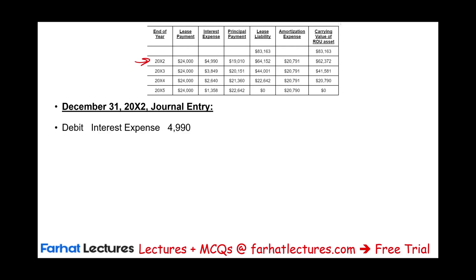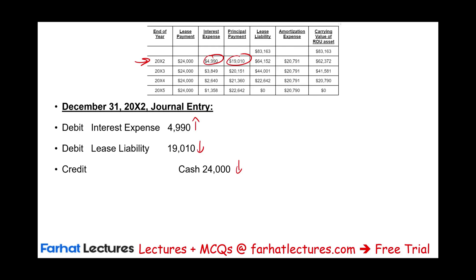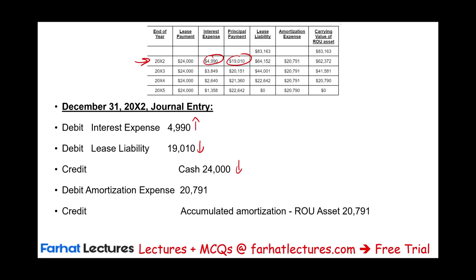For year X2, the journal entry is: debit interest expense $4,990, debit lease liability (principal payment) $19,010, and credit cash $24,000 — reducing cash, reducing the liability, and recording interest expense. But we are not done. We still have the right-of-use asset to amortize. Debit amortization expense $20,791, credit accumulated amortization $20,791.